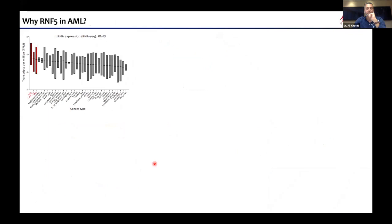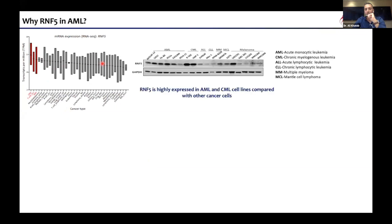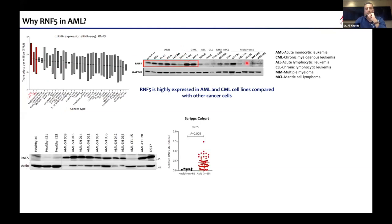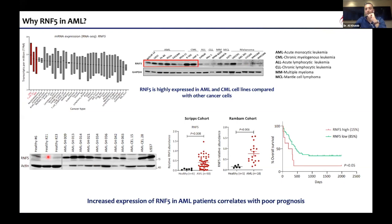So why study RNF5 in AML? We started by analyzing RNA-seq datasets from various cancer cell lines based on the Cancer Cell Line Encyclopedia, and we found that RNF5 expression is very high in leukemia cell lines compared with other cancer cells — the highest expression is found in CML, T-ALL, and AML cell lines. We confirmed this at the protein level, and in collaboration with the Scripps MD Anderson Cancer Center and Rambam Hospital in Israel, we confirmed that RNF5 is highly expressed in AML patient samples compared with blood from healthy donors. Stratifying patients based on high versus low RNF5 expression showed that AML patients with high RNF5 expression have poor prognosis.